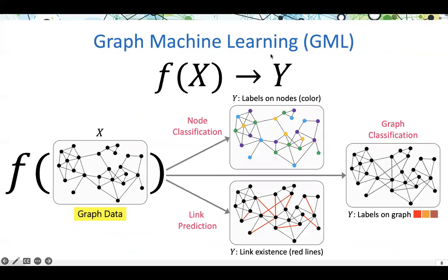In graph machine learning, a typical setting is the input as a graph, and we are trying to learn a mapping function f, so that various downstream tasks, such as node classification and link prediction, can be facilitated.